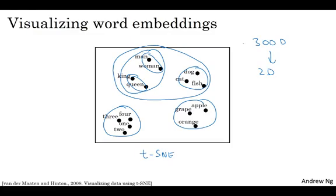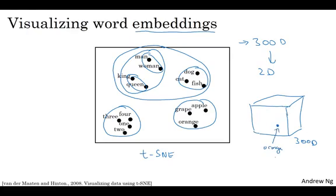And these representations, these sort of featurized representations in maybe a 300 dimensional space, these are called embeddings. And the reason we call them embeddings is you can think of a 300 dimensional space. And again, I can't draw a 300 dimensional space. This may be just a 3D one. And what you do is you take every word like orange and you have a 300 dimensional feature vector. So the word orange gets embedded to a point in this 300 dimensional space. And the word apple gets embedded to a different point in this 300 dimensional space. And of course, to visualize it, algorithms like t-SNE map this to a much lower dimensional space so you can actually plot the 2D data and look at it. But that's where the term embedding comes from.